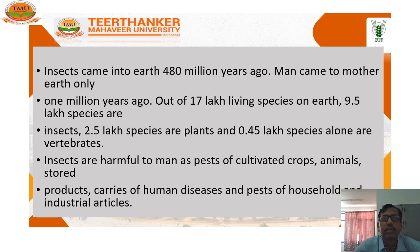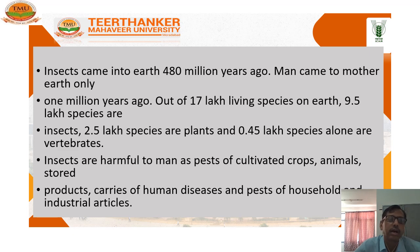Insects came to earth 480 million years ago. Man came to mother earth only 1 million years ago. Out of 17 lakh living species on earth, 9.5 lakh species are insects. 2.5 lakh species are plants and 0.45 lakh species alone are cultivated. Insects are harmful to men as pests of collected crops, stored animal products, carriers of human diseases, and pests of household and domestic animals.